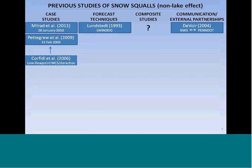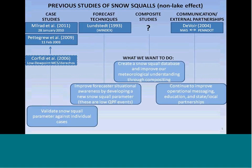If we look at the studies done on snow squalls — again, non-lake-effect snow squalls — we see a gap in the composite studies; not much has been done in that area. There have been several case studies done recently, and a forecast technique known as the Windex technique came out in the early 1990s and was used regionally across New York and New England, but it is a little antiquated at this point. Our goal is to expand on the composite study by creating a snow squall database to improve our meteorological understanding through compositing.